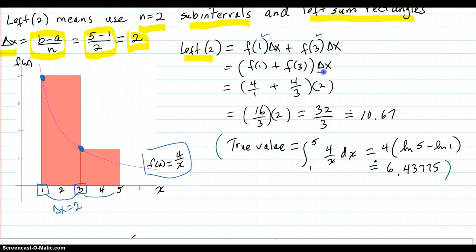Then we use a trick of the trade. You factor out the delta x, because that's constant. And you just compute, in this case, f of 1 plus f of 3, which is this, times delta x, which happens to be 2. And you end up with 32 thirds, or approximately 10.67.